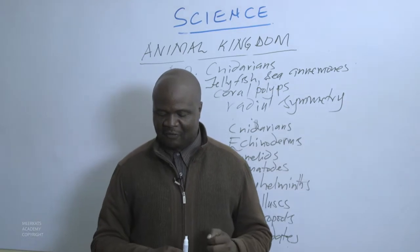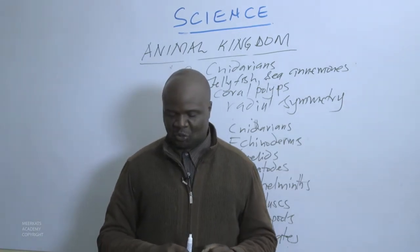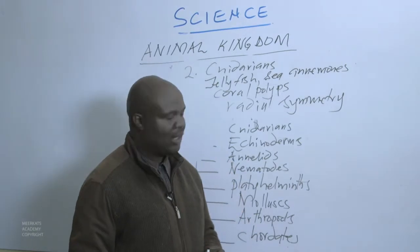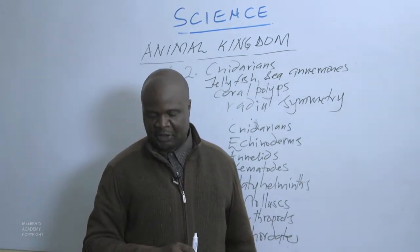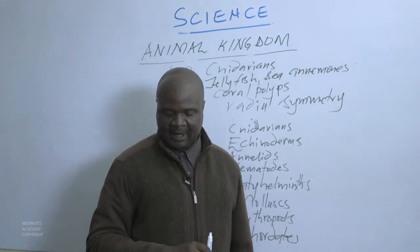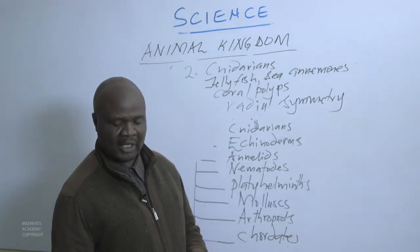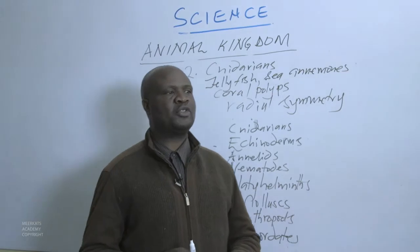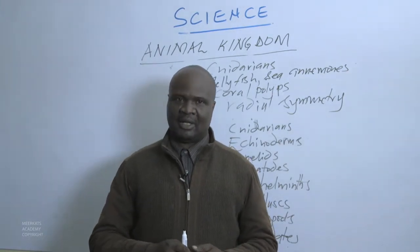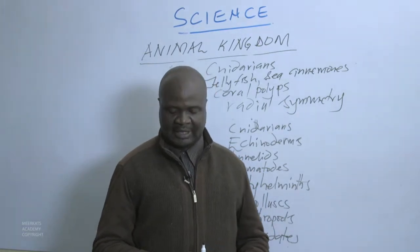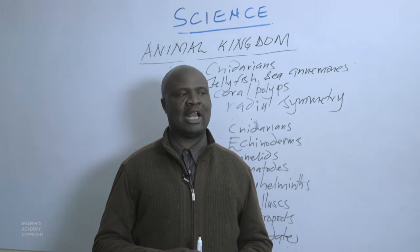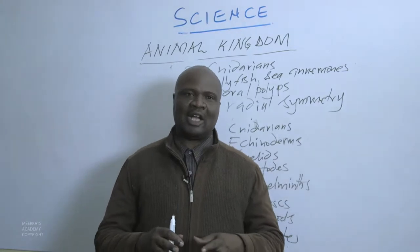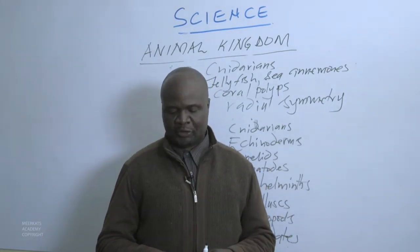Cnidarians have stinging cells which they use to catch fish. Cnidarians are not interested in using human beings as food, but their sting causes intense pain and can sometimes kill animals. They can also kill human beings because their stings produce a very powerful poison, which can cause heart attacks.